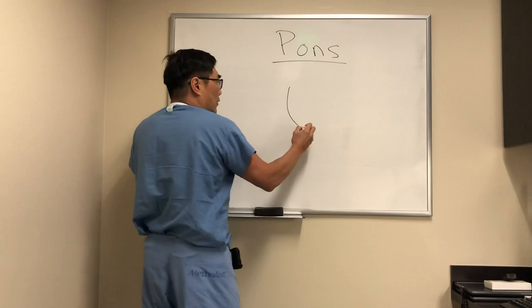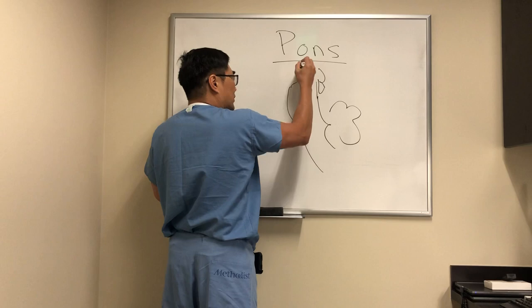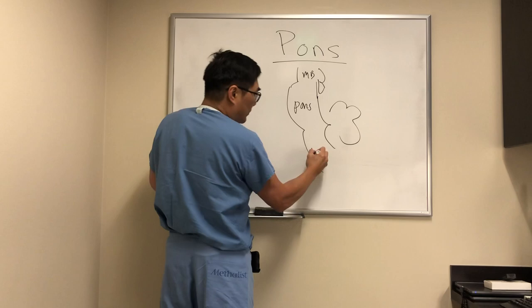Today we're going to talk about the pons. The pons is in the middle of the brainstem — we've got the midbrain, the pons, which is this bulgy part, and the medulla.